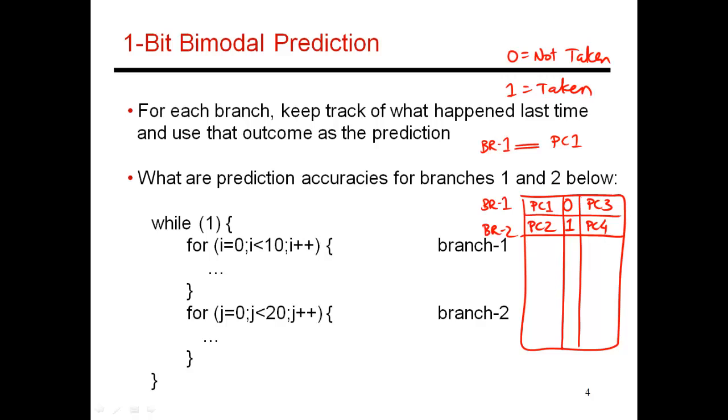Let me just clarify that this table is now called a 1-bit bimodal predictor. It's called 1-bit because I'm only maintaining 1 bit of history. I'm only keeping track of what this branch did the last time I encountered it.